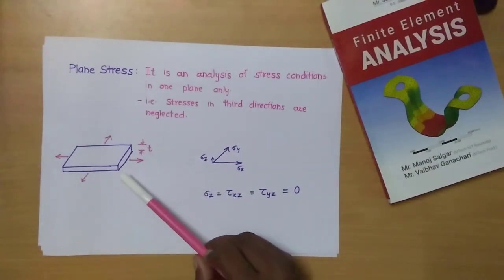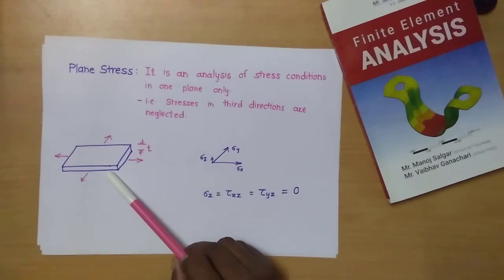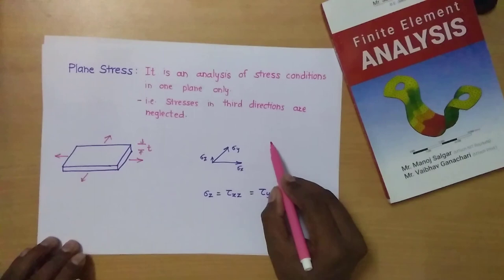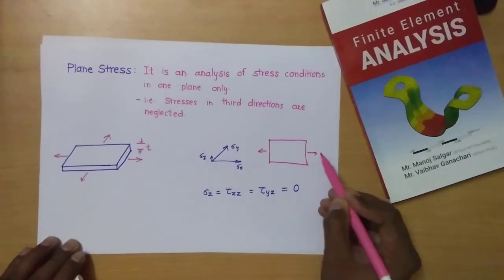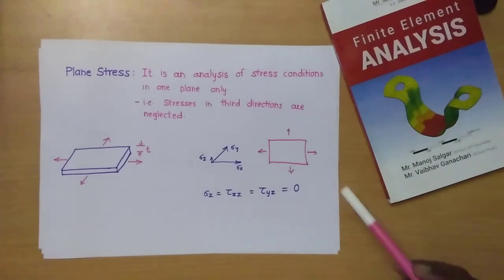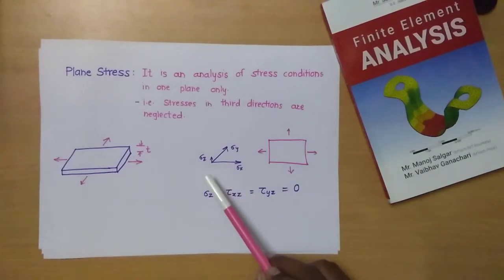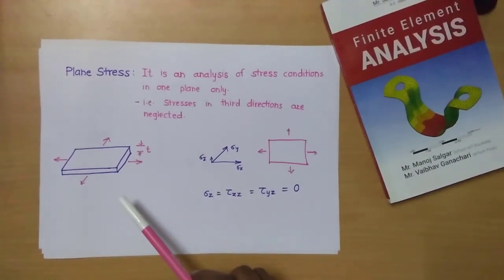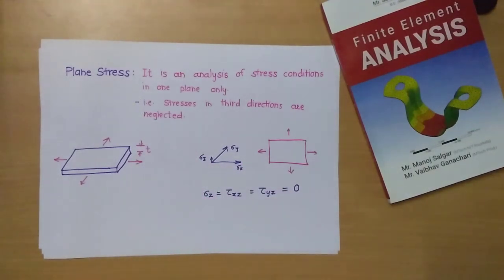Objects having smaller thickness — we will convert these into a plane stress condition. In the analysis, we draw a 2D plane, apply forces, convert the object into 2D, and do the analysis with Sigma Z equal to 0. Keep in mind: having smaller thickness and uniform cross section means it will be converted into a plane stress condition.